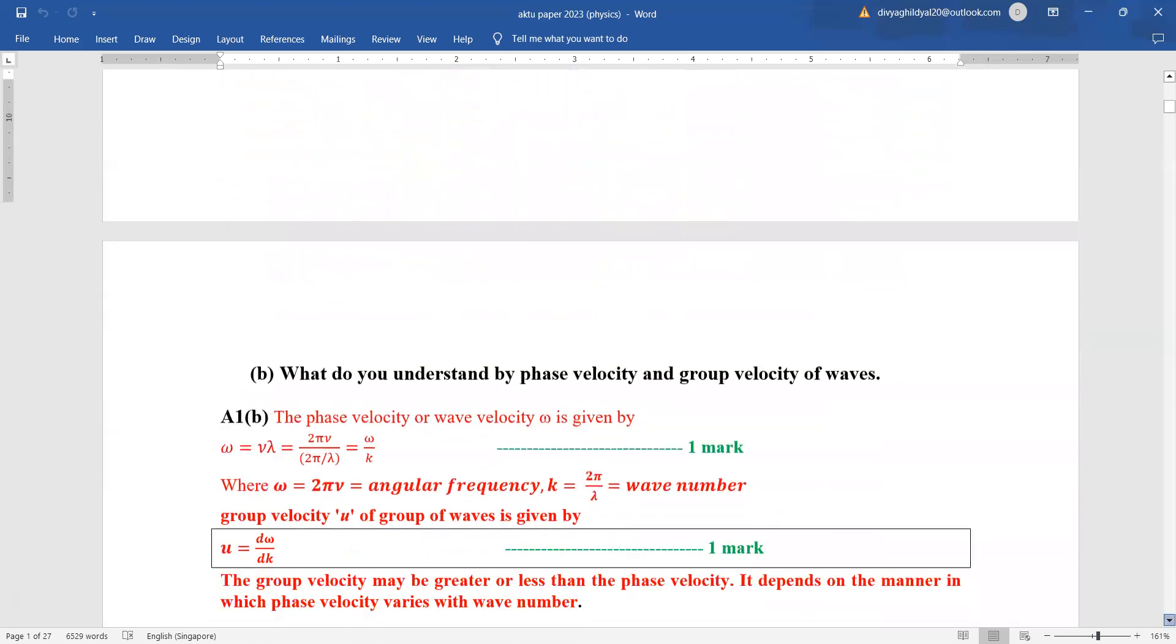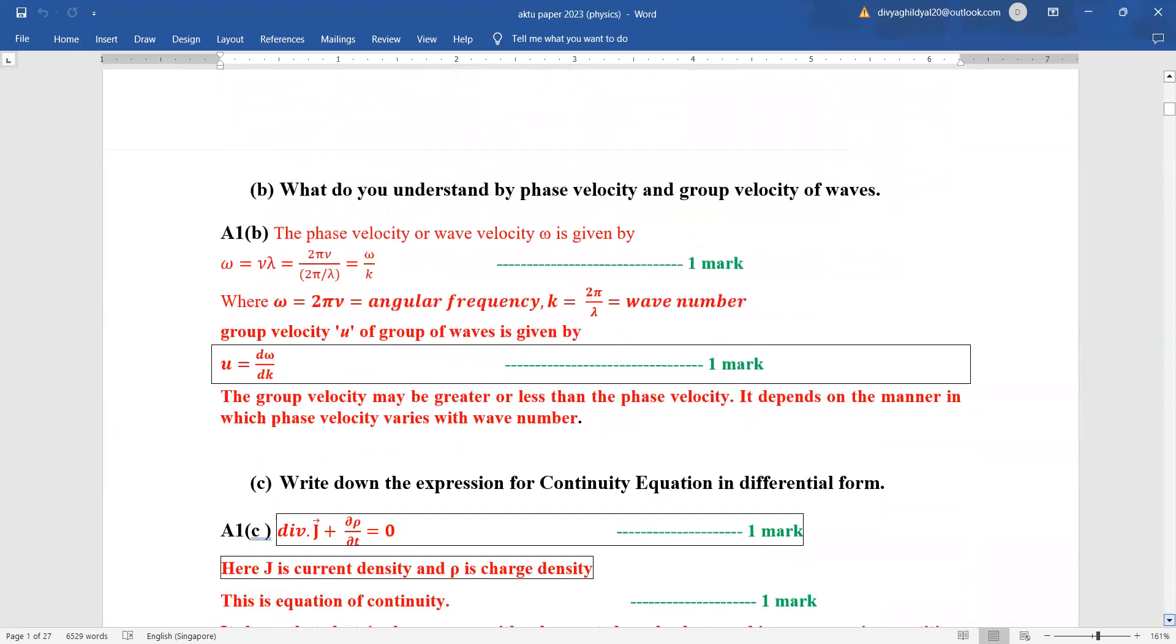Next question, two marks. What do you understand by phase velocity and group velocity? One mark for phase velocity, one mark for group velocity. You can also state that group velocity may be greater or less than the phase velocity. Phase velocity is given by frequency into wavelength, omega is angular frequency, K is wave number. Group velocity U is d omega by dk.